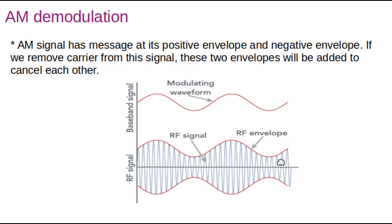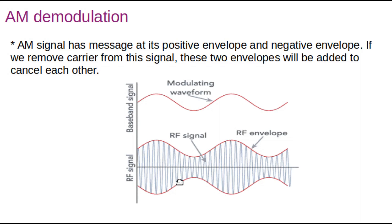Here you can see the AM signal in which our message signal appears at both the positive side and the negative side. So during the demodulation process, if you remove the carrier from this AM signal, the message signal at the positive side and the negative side will be added and they will get cancelled. This addition is an out-of-phase addition — the message signal at the positive and negative sides are of the same magnitude but opposite phase, so when added they cancel out.